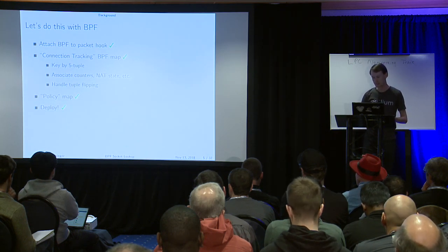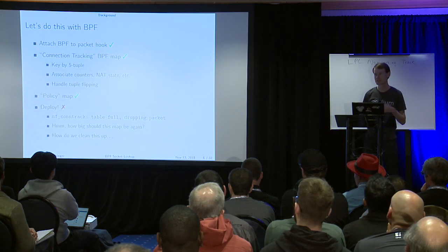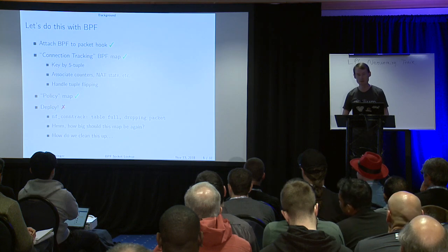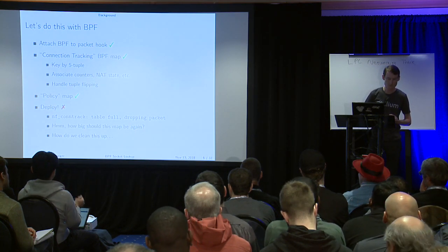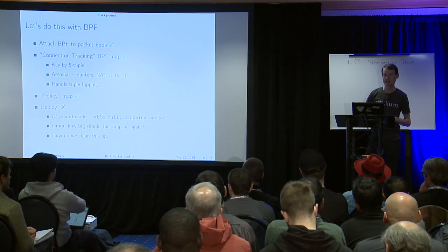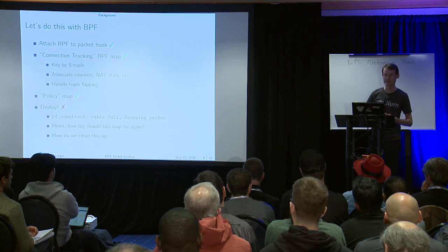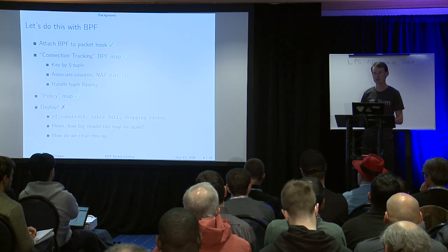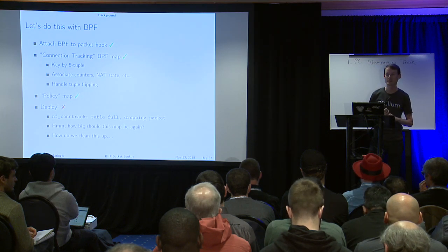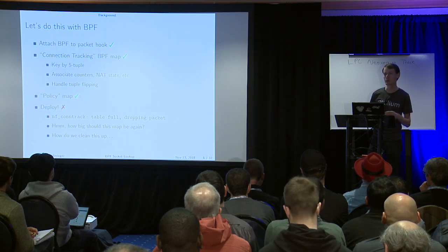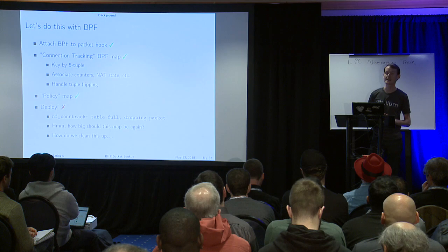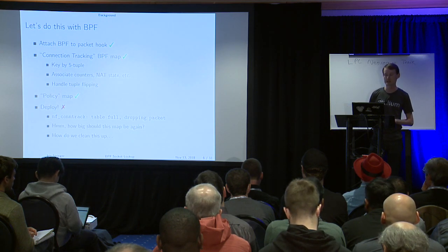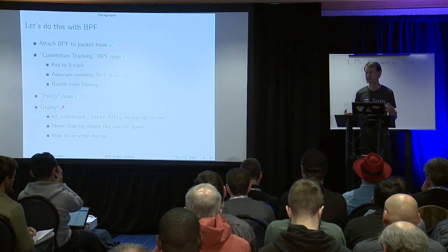If you've done scalability testing with NetFilter, you've probably hit the 'nf_conntrack table full dropping packet' message. The fundamental problem is what happens when your connection tracking table becomes full. If you're building a firewall solution, you're not going to want to fail open and allow these packets through - you want to drop them. From a BPF perspective, we don't have resizable maps, so there's no way to dynamically size these things. And even if we did, it's an open question whether you want traffic to govern how big your connection tracking table is.